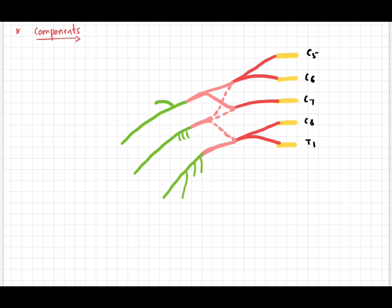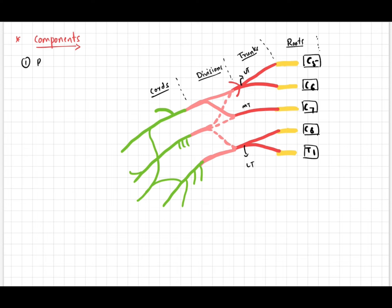Trunks: C5 and C6 unite to form the upper trunk, C7 alone forms the middle trunk, and C8 and T1 unite to form the lower trunk.